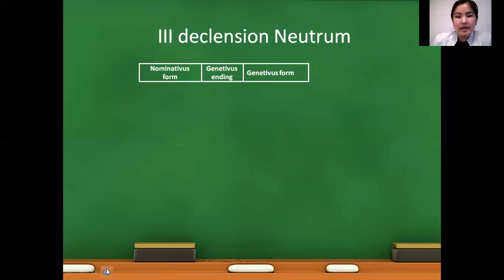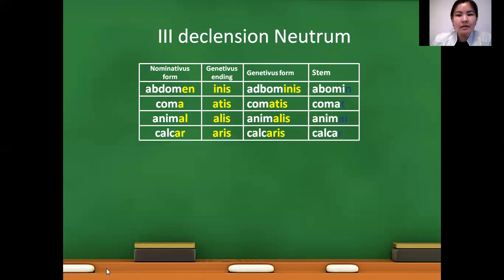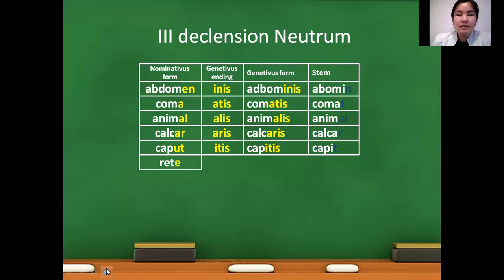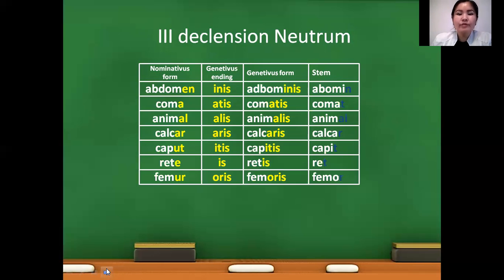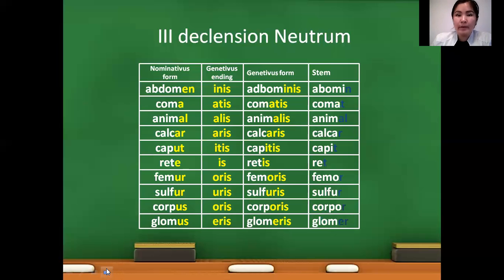In third declension neutrum: abdomen — genitive abdominis — we remove ending -is and stem will be abdomen. Coma — comatis — stem: comat. Animal — animalis — stem: animal. Calcar — calcaris — stem: calcar. Caput — capitis — stem: capit. Rete — retis — stem: ret. Femur — femoris — stem: femor. Sulfur — sulfuris — stem: sulfur. Corpus — corporis — stem: corpor. Glomus — glomeris — stem: glomer.